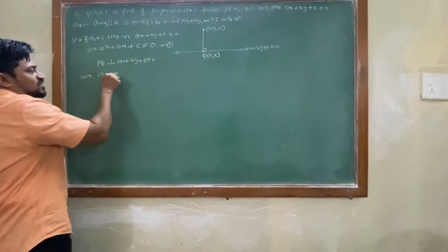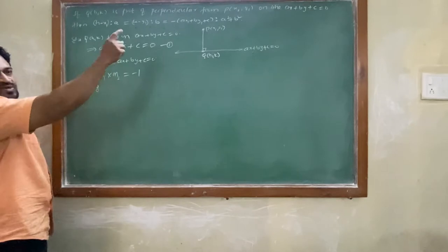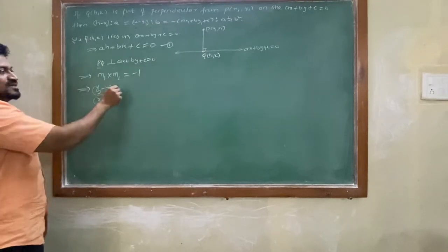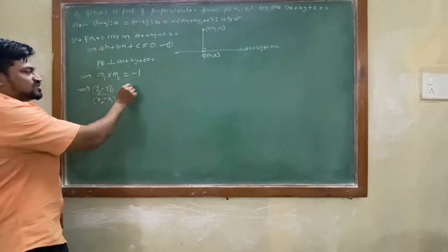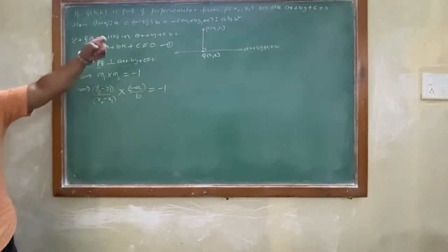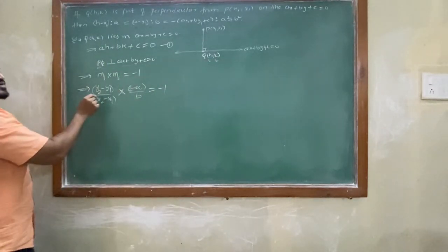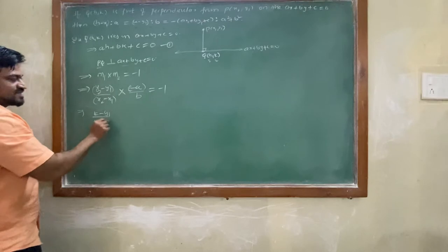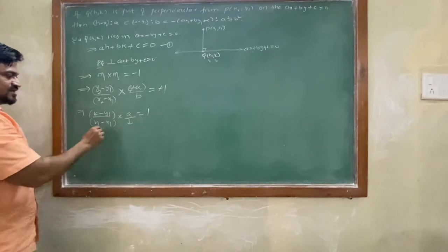Since PQ is perpendicular to the line, the product of their slopes equals -1. m1 (slope of PQ using two points) times m2 (slope of the line in standard form) equals -1. The slope of PQ using point form is (k-y1)/(h-x1), and the slope of the line ax+by+c=0 is -a/b.